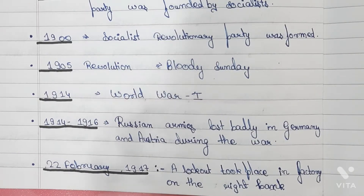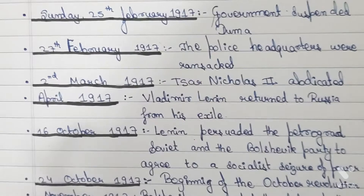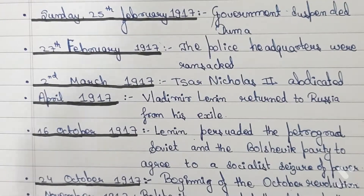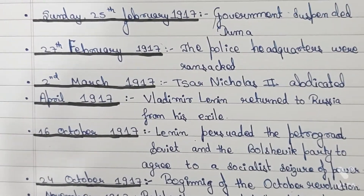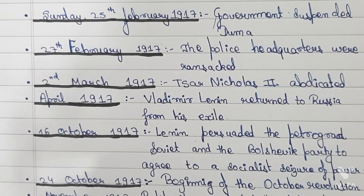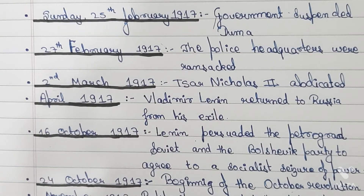22nd February 1917: a lockout took place in a factory on the right bank. 25th February 1917: the government suspended the Duma. 27th February 1917: the police headquarters were ransacked.